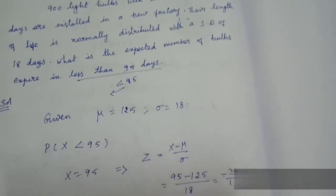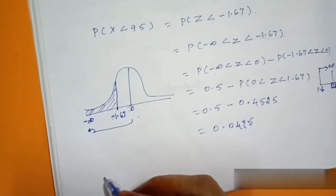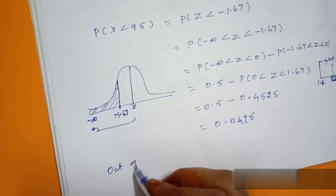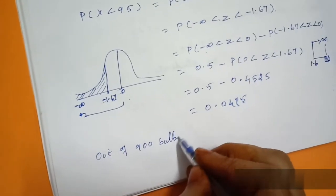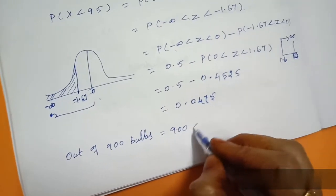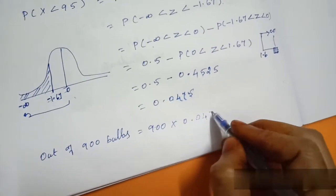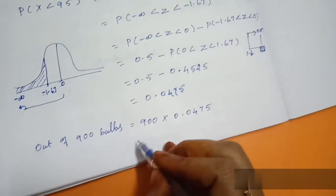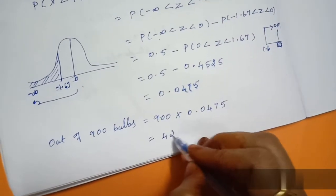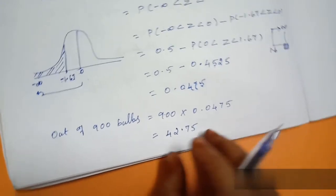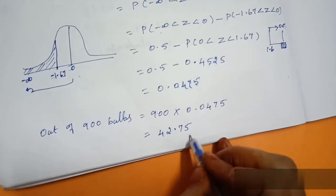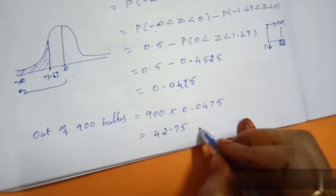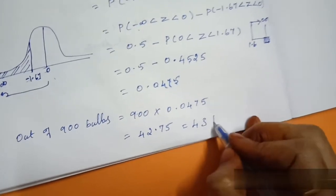The probability that a bulb expires in less than 95 days is 0.0475. Out of 900 bulbs, the expected number is 900 × 0.0475 = 42.75, which rounds to approximately 43 bulbs.